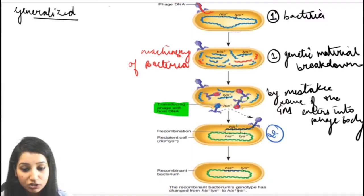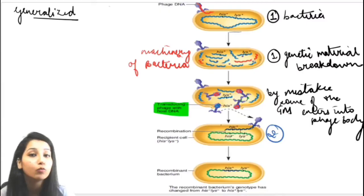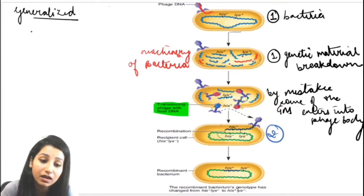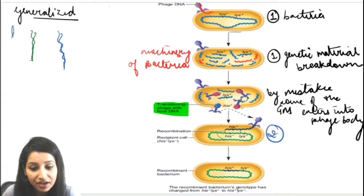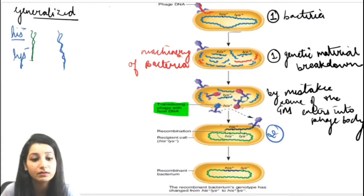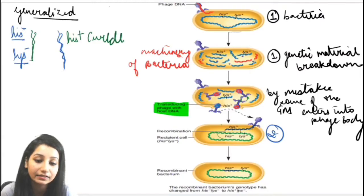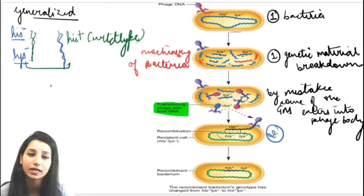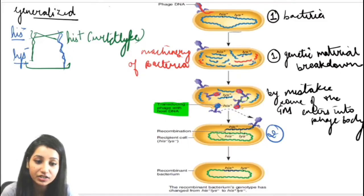Now the genetic material from the first bacterium and the genetic material of the second bacterium will resemble each other. If they have the same type of alleles, then there can be a recombination occurring between these two. The recipient has histidine-negative and lysine-negative — both are mutant. The donor has histidine-positive, meaning wild type. These two are homologous regions that will result in recombination.